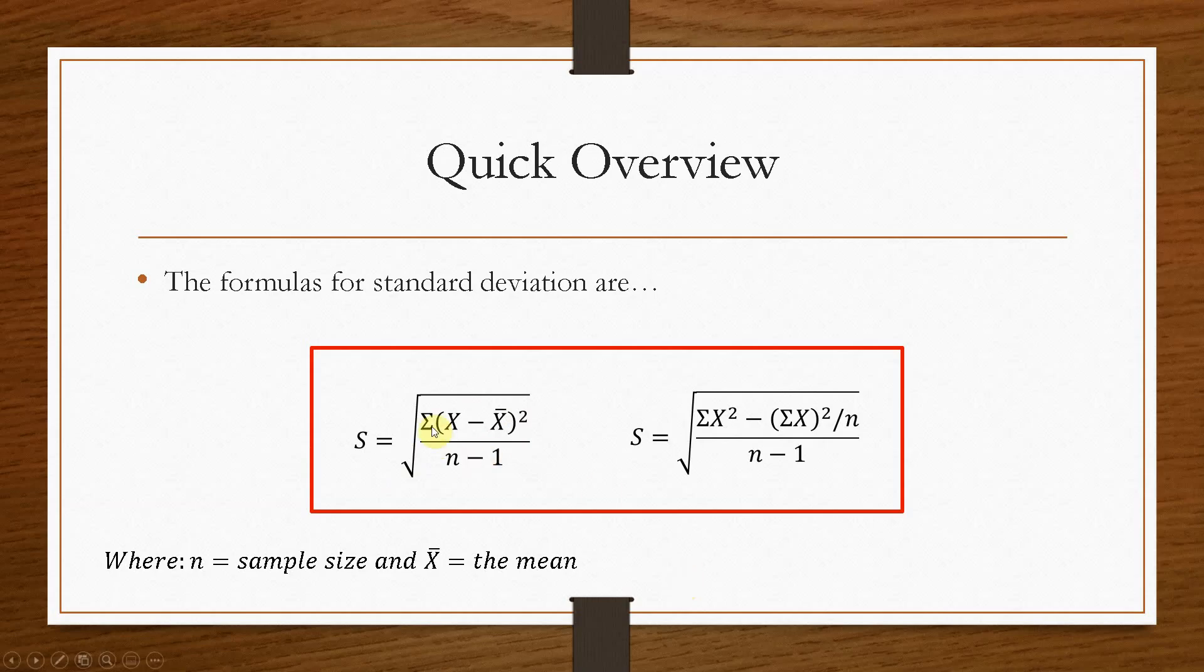So this symbol here is sigma. Now sigma denotes a summation or a total. So this means that the value on the top of this fraction is going to be the total of x minus x bar squared.